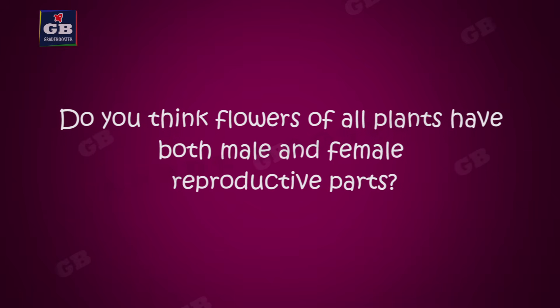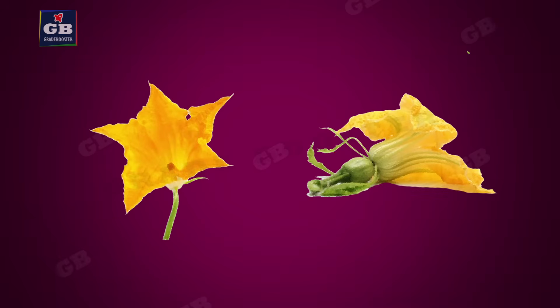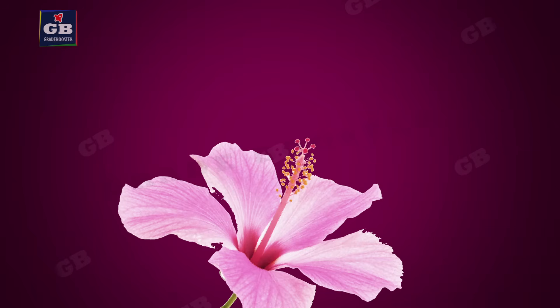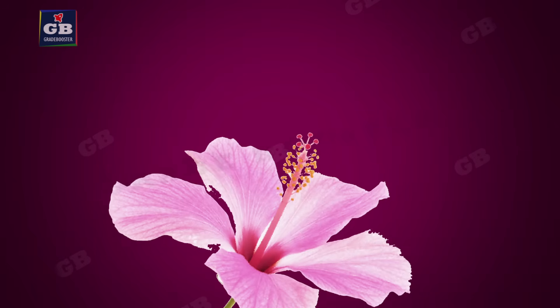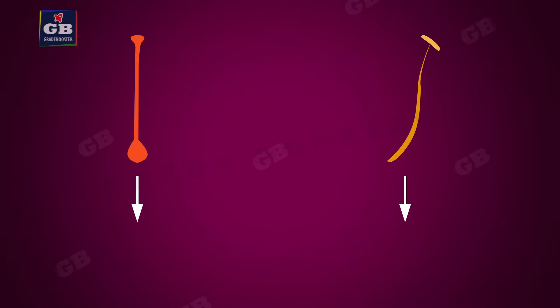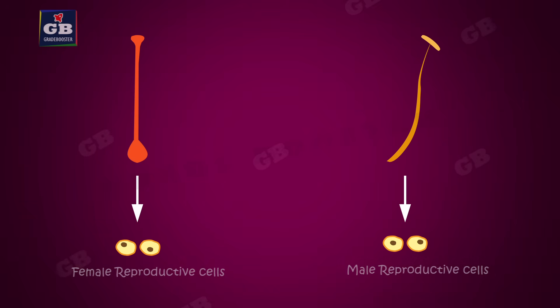Do you think flowers of all plants have both the male and female parts? No. In plants like watermelon and papaya, the flowers are unisexual — that means male and female flowers are separate. Whereas in plants like hibiscus and mustard, the flowers are bisexual — that means a flower has both male and female parts.